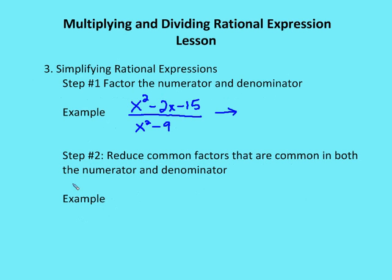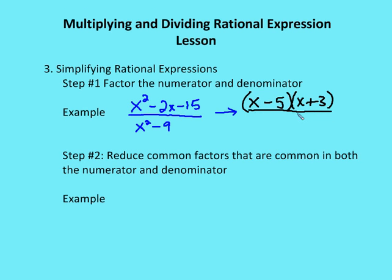Now let's look at simplifying rational expressions. There are two steps. First, factor the numerator and denominator. The numerator factors as x minus 5 times x plus 3. You can use a diamond and box process for factoring quadratics, but most of you can factor in your head. So x minus 5 times x plus 3 are the two factors of that quadratic.